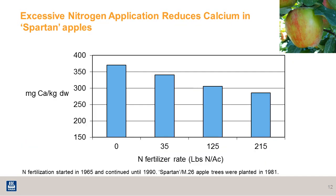Excessive nitrogen application can impact calcium uptake into the fruit. In this chart, you can see that the higher the nitrogen rate, the lower the calcium in the fruit. Typically, when you apply higher nitrogen rates, you get larger fruit. And since calcium is a challenging nutrient to get into the fruit, as the fruit gets bigger, calcium uptake may not keep up with the size of the fruit.